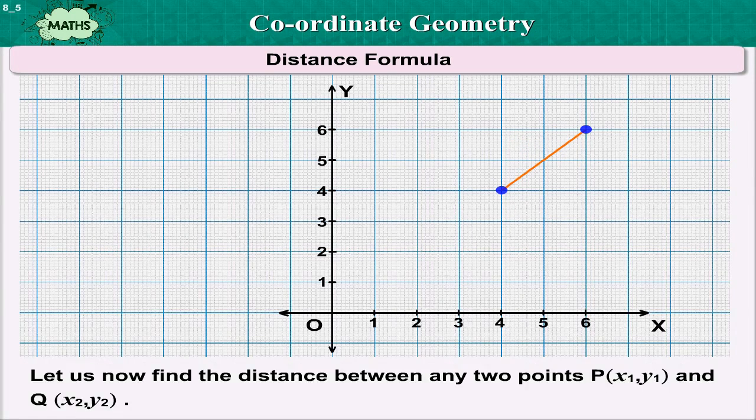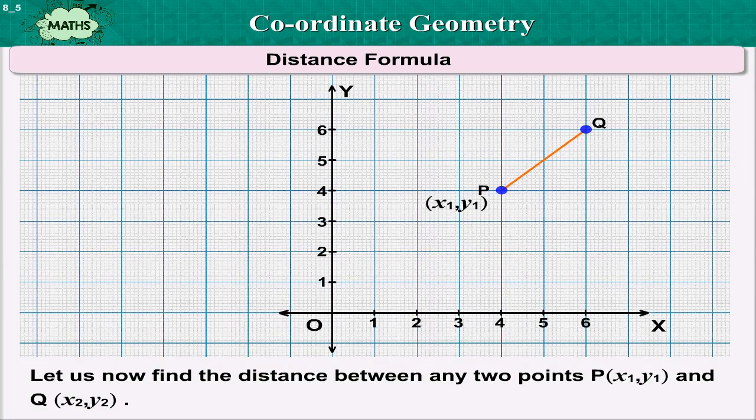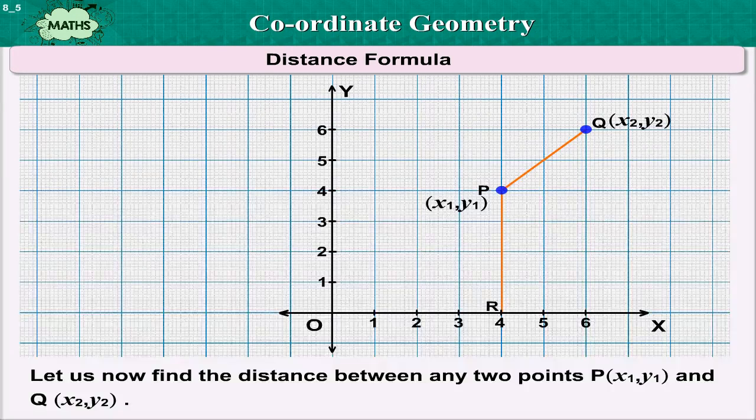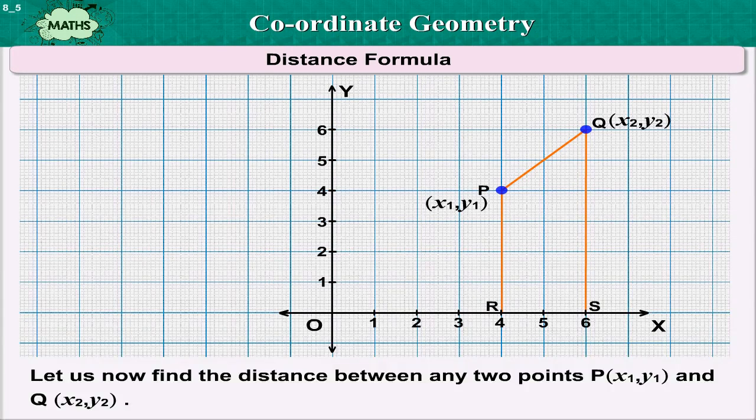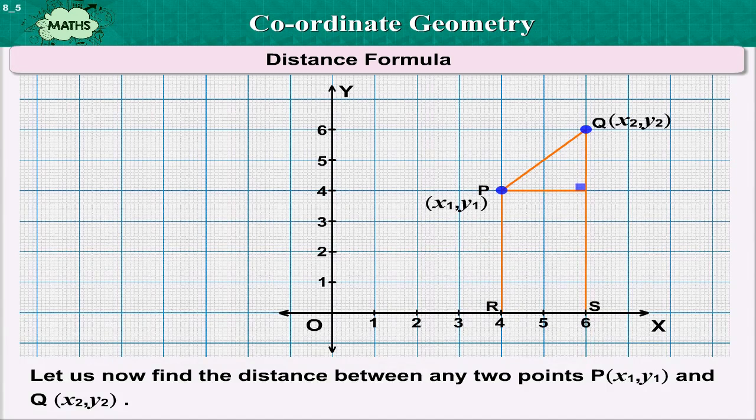Let us now find the distance between any two points P and Q. Draw PR and QS perpendicular to the x axis. A perpendicular from the point P on QS is drawn to meet it at the point T.